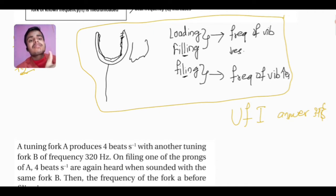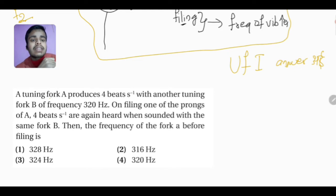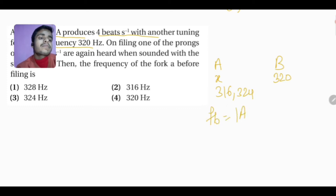On the basis of the general concept, let's see the question. Tuning fork A produces 4 beats per second with another tuning fork B of frequency 320 Hz. So we consider: A minus B — B's frequency is 320, so A's frequency could be 316 or 324. The beat frequency difference is 4.